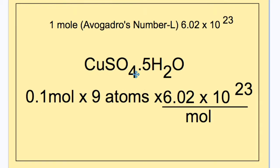So we note that there are 4 plus 5 times 1, 9 atoms of oxygen in hydrated copper sulfate, or copper sulfate with water in it. And 0.1 moles multiplied by 9 atoms multiplied by the Avogadro's number, which represents 1 mole.